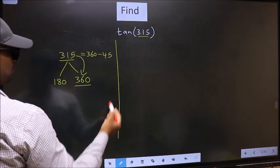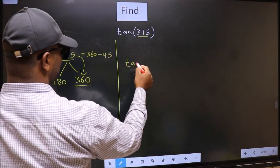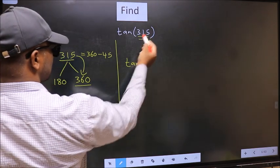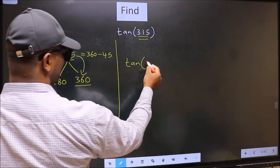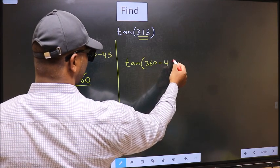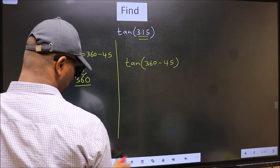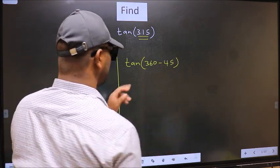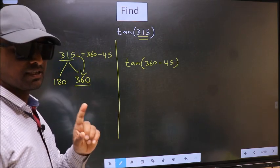So this will become tan. In place of this, we write this: 360 minus 45. This is your step 1.